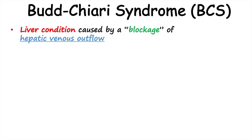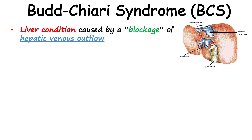Budd-Chiari syndrome is a liver condition caused by a blockage of hepatic venous outflow. Normally, a lot of blood goes through the liver — it comes through the portal vein but also through hepatic arteries, and these drain through hepatic veins. There are three main hepatic veins that drain into the inferior vena cava. Budd-Chiari syndrome occurs when there is a blockage of one or more of these hepatic veins. If only one hepatic vein is blocked, this may lead to what we call silent Budd-Chiari syndrome, with no overt issue. It often requires at least two hepatic veins to be blocked.